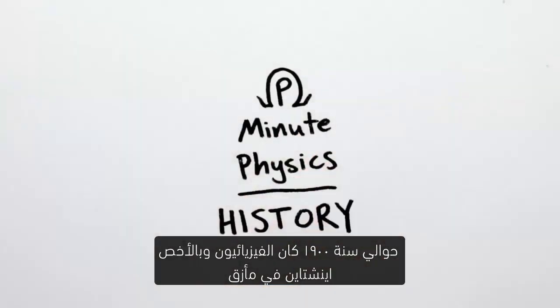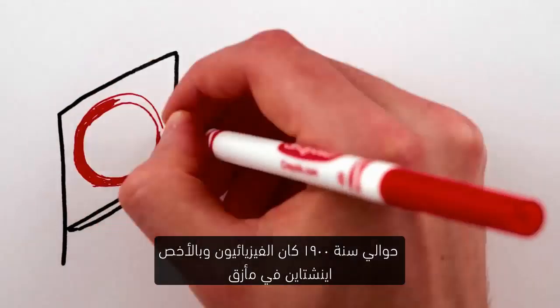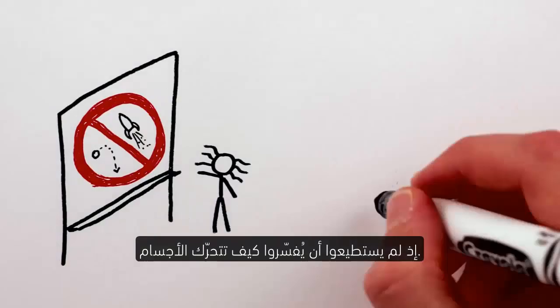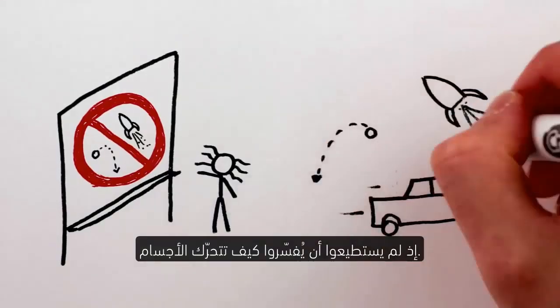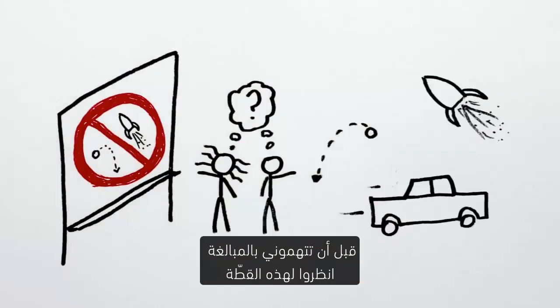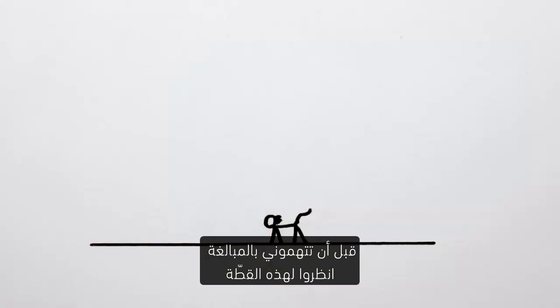Around 1900, all of physics, and particularly Einstein, was in trouble. They couldn't figure out how anything could move. Now, before you complain that I'm exaggerating, check out this cat.